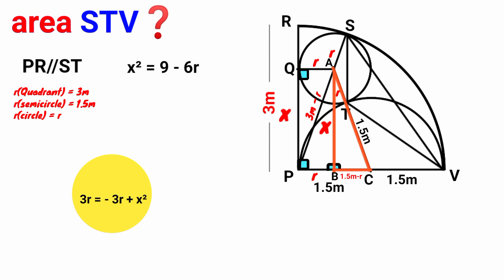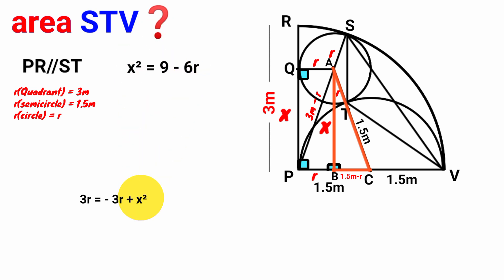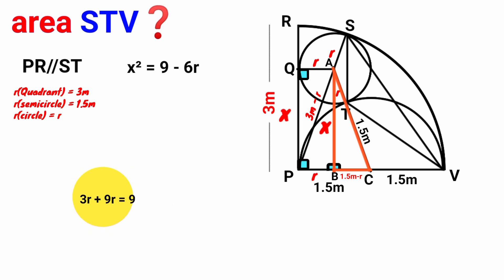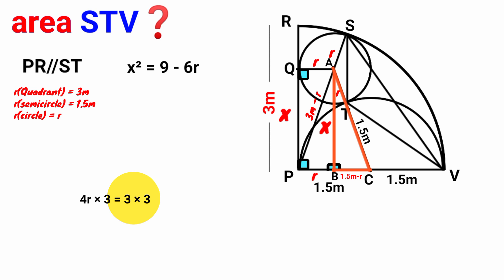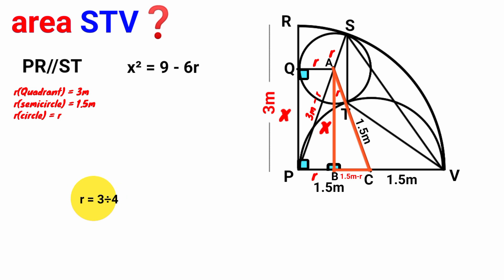So 3r = −3r + x². Recalling that x² = 9 − 6r, we substitute: 3r = −3r + (9 − 6r), giving 3r = 9 − 9r. Taking −9r to the left: 3r + 9r = 12r = 9. Since 12r = 9, we get 4r × 3 = 3 × 3, so dividing both sides by 4 gives r = 3/4 meters. The radius of the small circle is 3/4 meters.